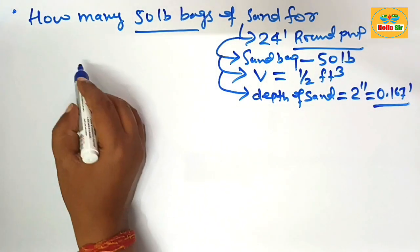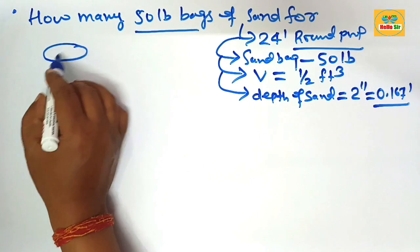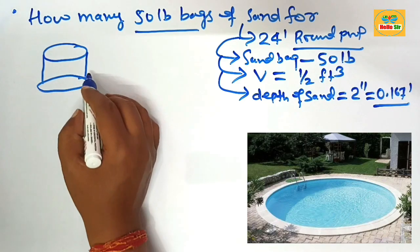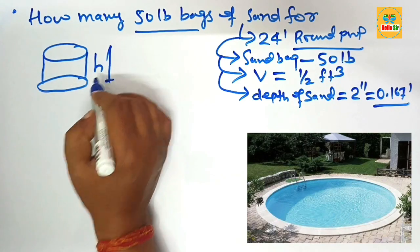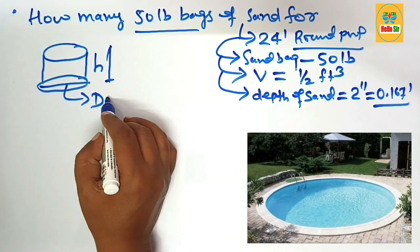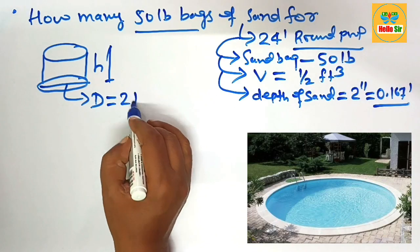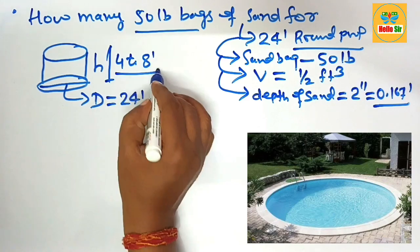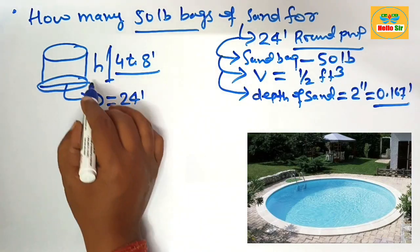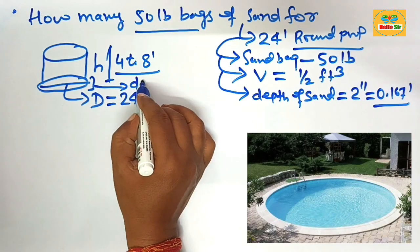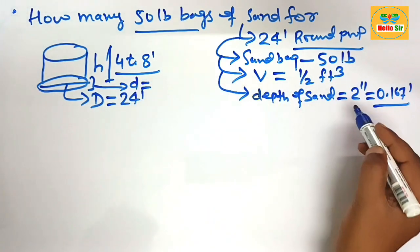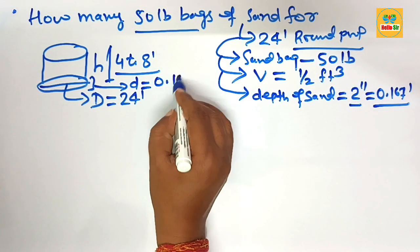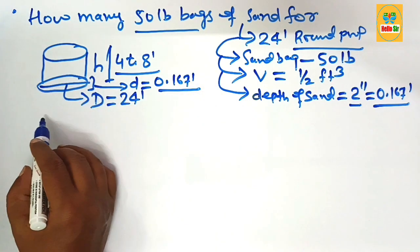First, here we make a rough diagram to understand the dimensions of the swimming pool. This is the height of the pool, and this is the diameter of the pool, which is given as 24 foot. The height may be 4 to 8 foot depending on conditions. The depth of sand material required for leveling of the sand base is about two inches, which equals 0.167 foot.